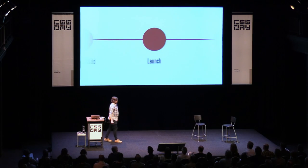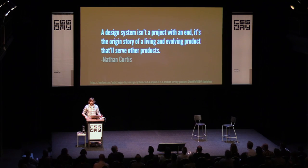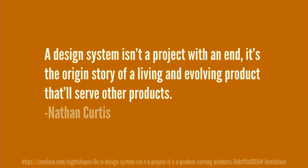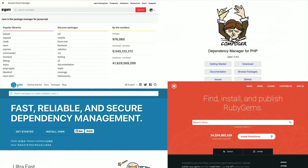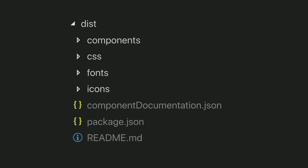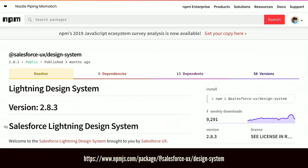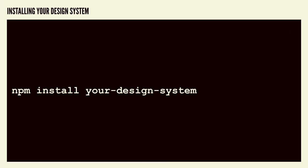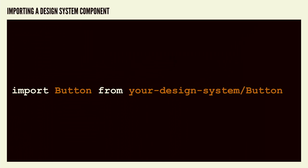Launching a design system — what does it mean? Nathan Curtis talks about this: a design system isn't a project with an end, but rather a product that serves other products. Deploying a design system means actually getting it into real applications using tools like package managers — Composer, NPM, and similar tools. We publish our design system to these package managers, distribute it, bundle it all up, and then install that design system into our actual projects. Now the developer can take it, install it, import the button, use that stuff, and all is good.